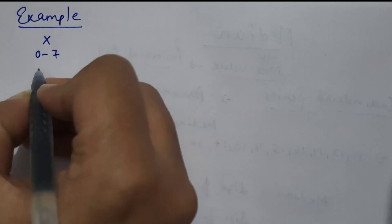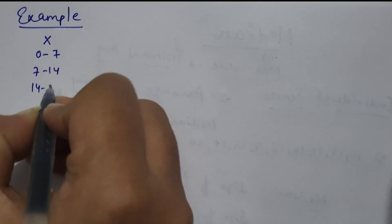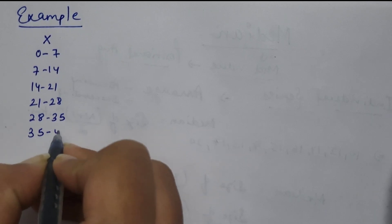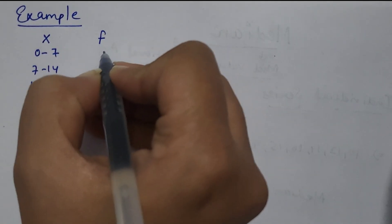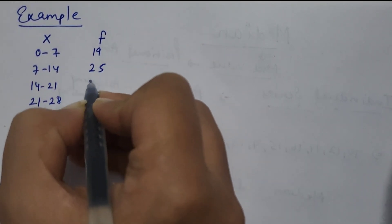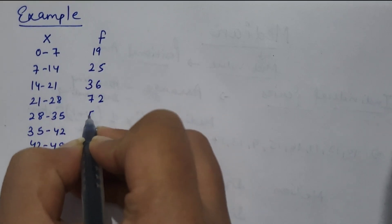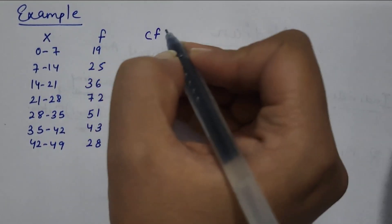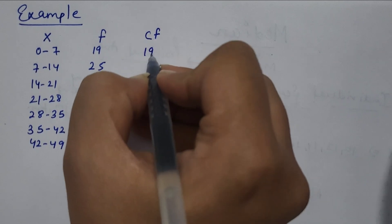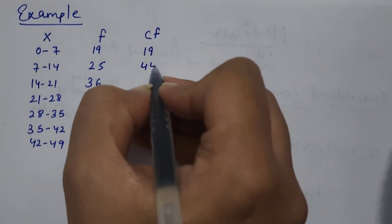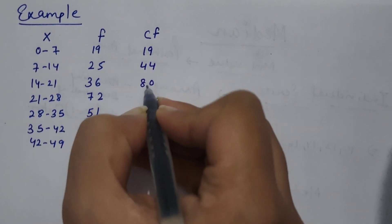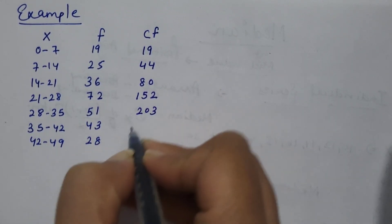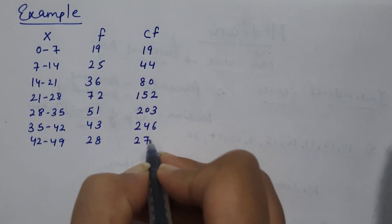With the help of an example: class intervals are 0–7, 7–14, 14–21, 21–28, 28–35, 35–42, and 42–49. Frequencies are 19, 25, 36, 72, 51, 43, and 28. First step is to calculate cumulative frequency: 19, then 19 plus 25 equals 44, then 44 plus 36 equals 80, then 80 plus 72 equals 152, then 152 plus 51 equals 203, then 203 plus 43 equals 246, and finally 246 plus 28 equals 274.